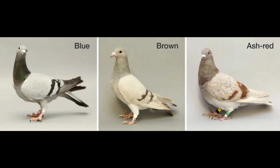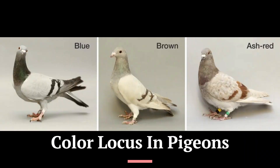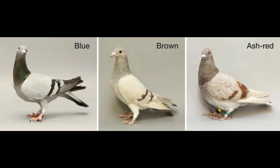The major color locus — a locus is a specific area on a chromosome — controls whether birds are blue, brown, or ash red. Blue is considered wild type because it was the color of the domestic pigeon's wild ancestor. The differences between blue, brown, and ash red are most visible in the wing pattern. In the photos on the right, all three birds have the bar pattern, but the colors of the bars are noticeably different.